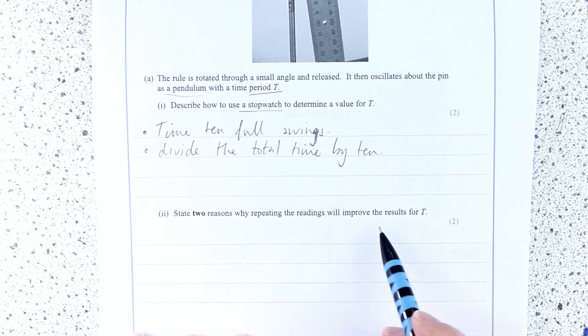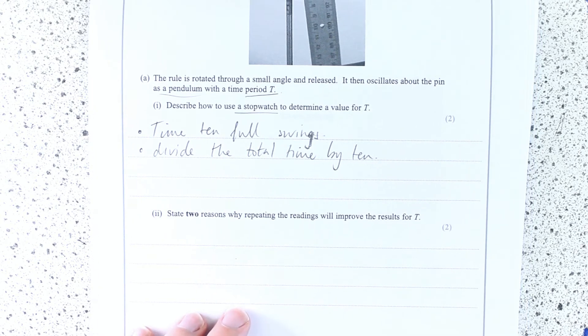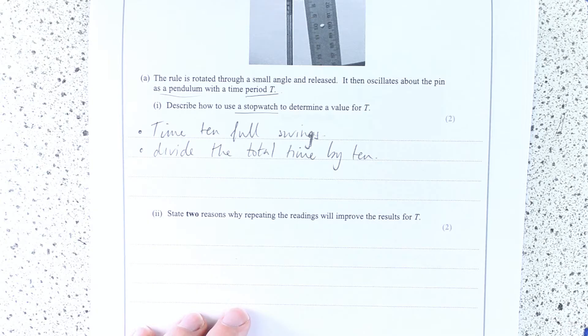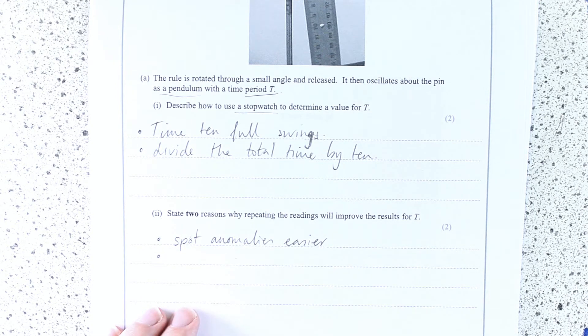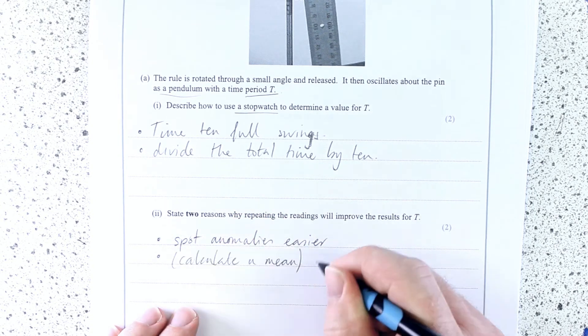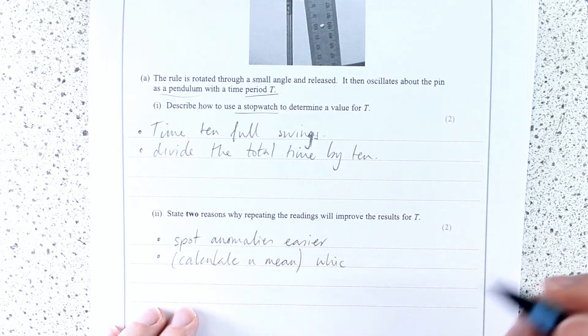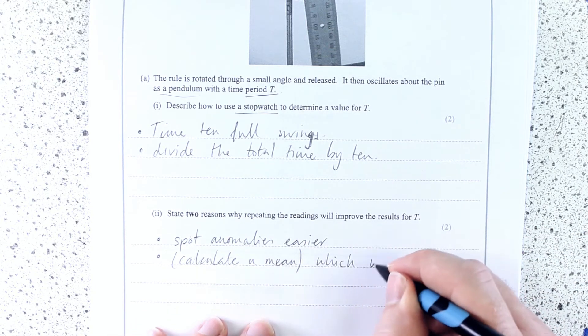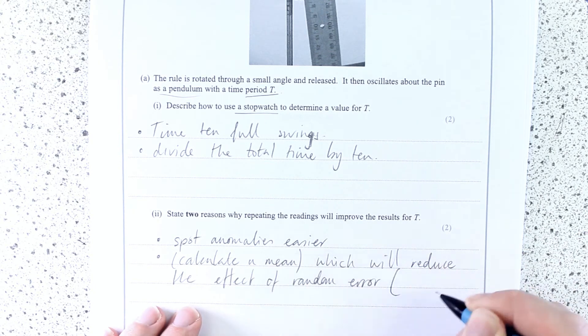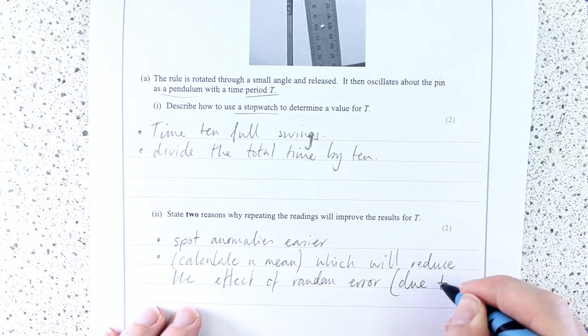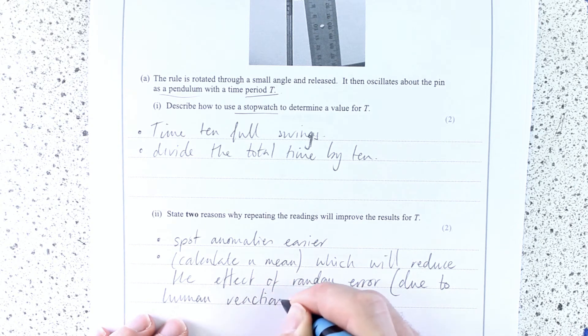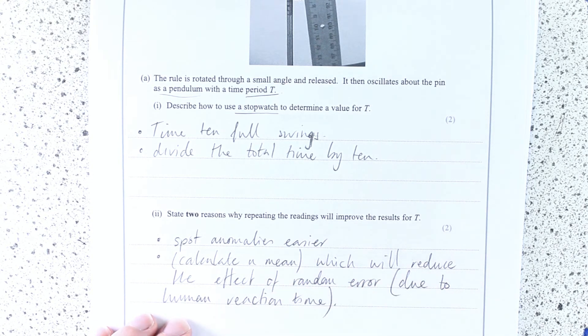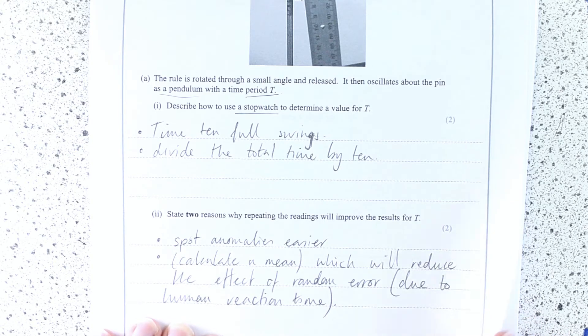Two reasons why repeating the readings will improve the results for T. So why should we do more repeats? Well, actually, this is good old spot anomalies. And also the fact that if you do that, you can calculate a mean. It will reduce the effect of random human error. And why is that? It's due to human reaction time. Okay, I hope that makes sense. There's two nice two markers.